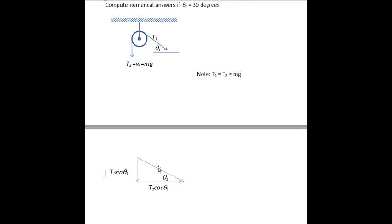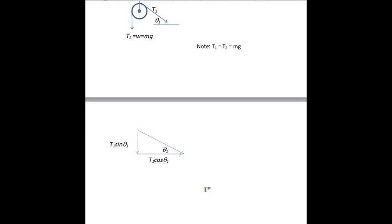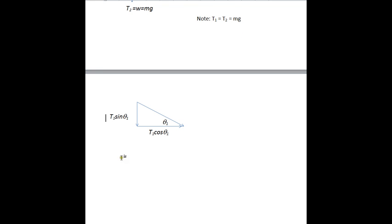Opposite over hypotenuse is sine, adjacent over hypotenuse is cosine. So I think then we were tasked to find numerical values for these. If we know theta 1 is 30 degrees, we can do that.